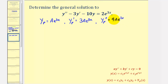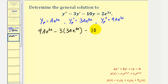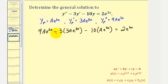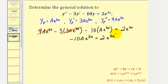For y'' we have 9Ae^(3x), minus for three times y' we'd have 3 times 3Ae^(3x), and then minus 10 times y, or 10 times A times e^(3x). This must equal 2e^(3x). Our goal is to solve for A. We notice 9Ae^(3x) minus 9Ae^(3x) cancels, leaving negative 10Ae^(3x) = 2e^(3x). We can divide out the exponential.